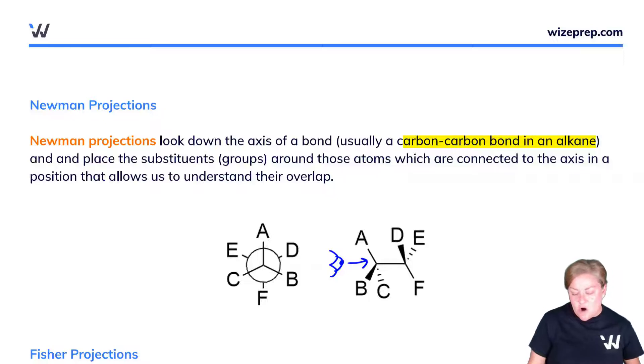In a Newman projection, it's really common to see this eyeball staring down the carbon-carbon bond. This carbon-carbon bond has a carbon in the front and a carbon in the back. We show the carbon at the front at the junction of each of those groups, and the carbon with the green dot is back behind everything. We have the green carbon in the back and the red carbon in the front.